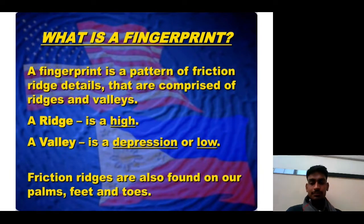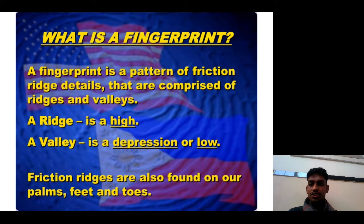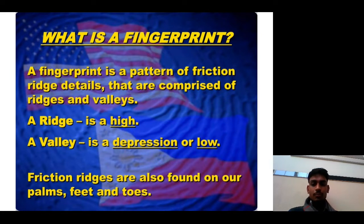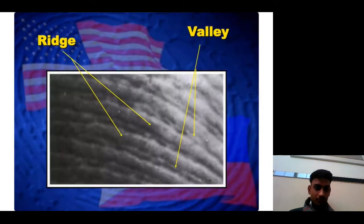A fingerprint is a pattern of friction ridge detail comprised of ridges and valleys. A ridge is high and a valley is a depression or low area. Friction ridges are also found on our palms, feet, and toes. Fingerprints of different individuals can be compared — this is a basic principle.